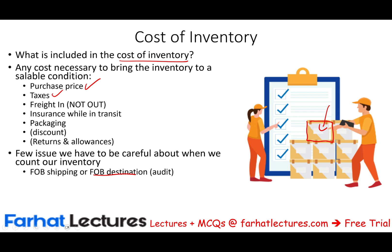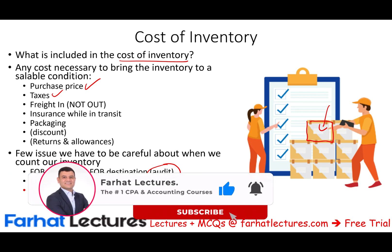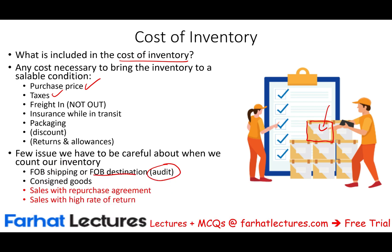FOB shipping and FOB destination are very important, especially when you are conducting an audit, counting inventory, and doing your job as an auditor. We also looked at consigned goods. In this session, we will focus on two more topics we need to be familiar with when it comes to costing inventory: sales with repurchase agreement and sales with a high rate of return, and how these two topics affect the inventory on hand.